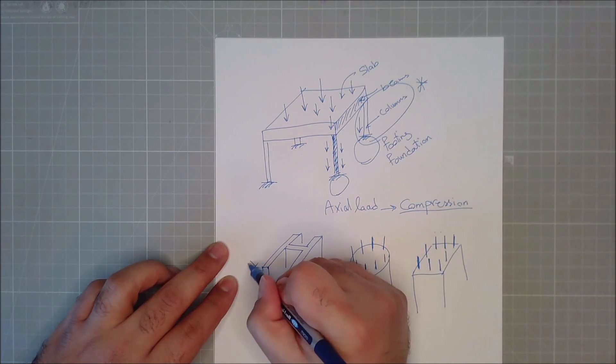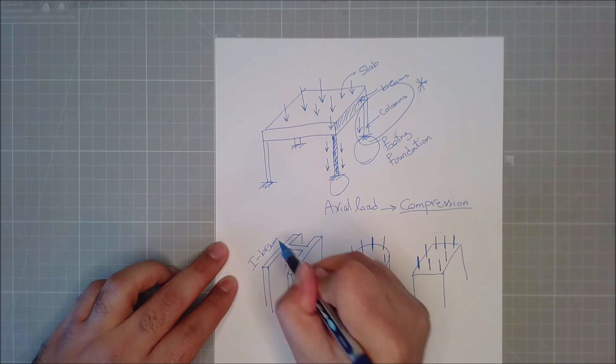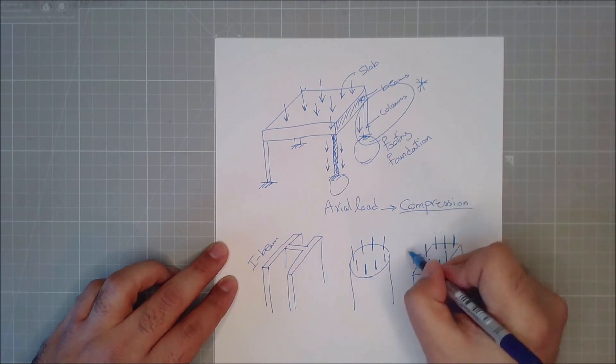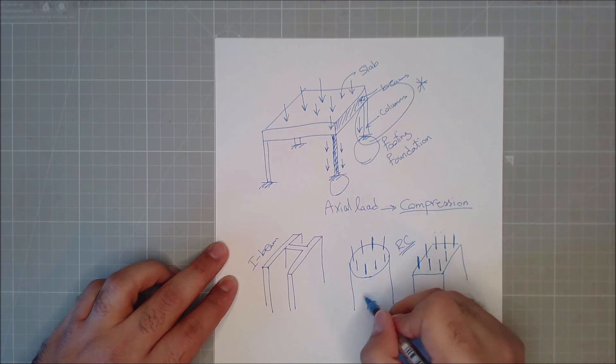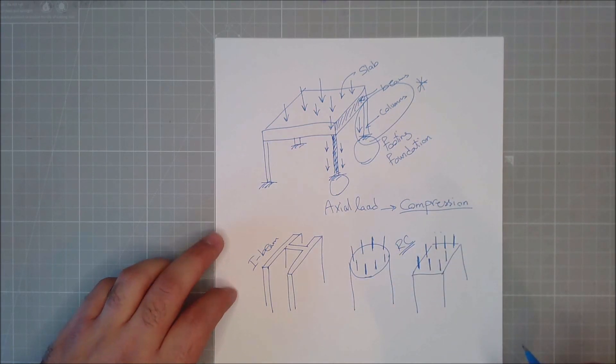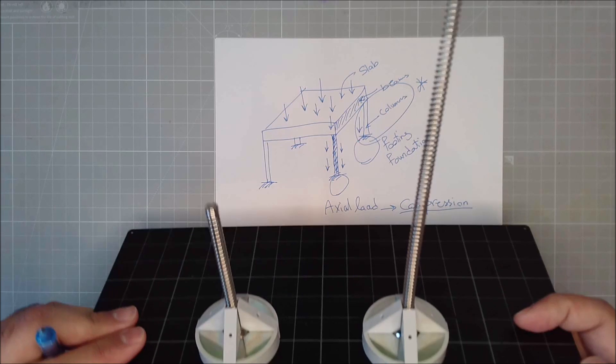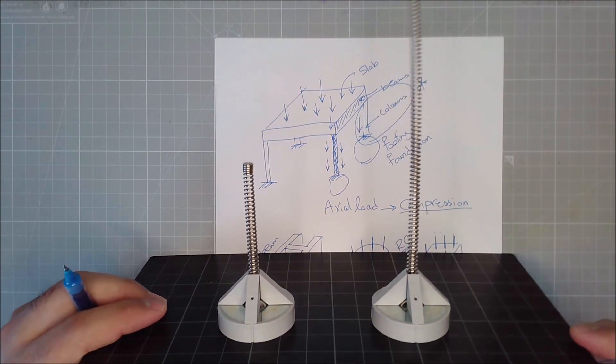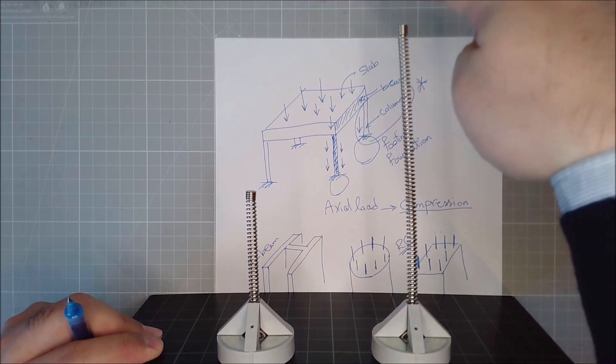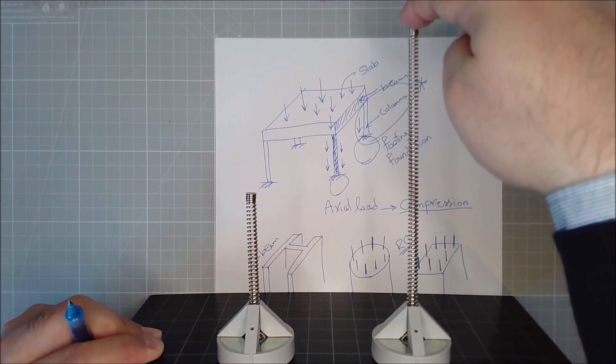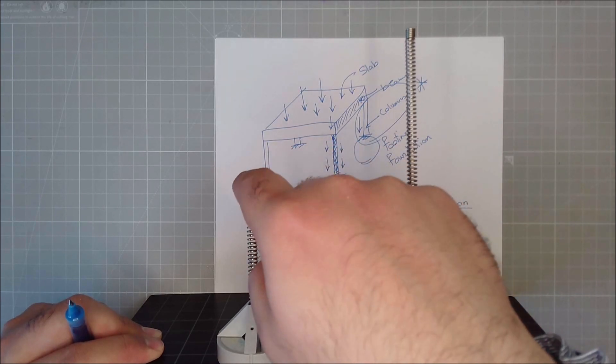Either an I-beam, usually for metal ones, or reinforced concrete, which can be square, rectangular, or circular. On the other side, depending on their height, columns can be slender and long, like this guy, and they can be short and stocky, like this guy.